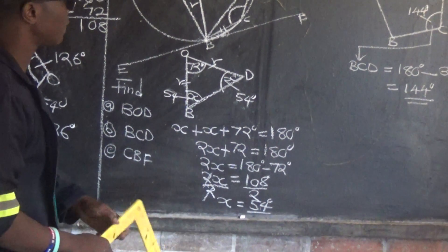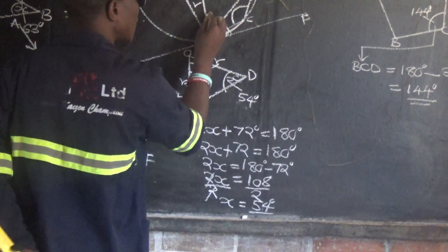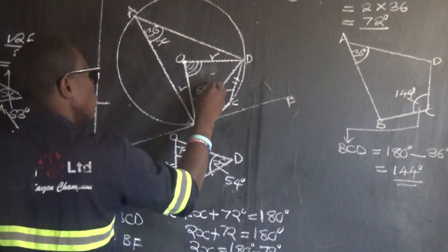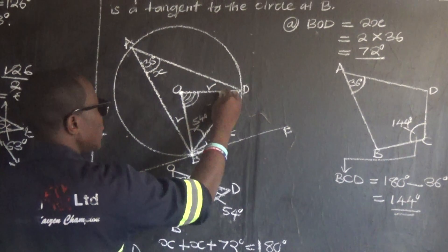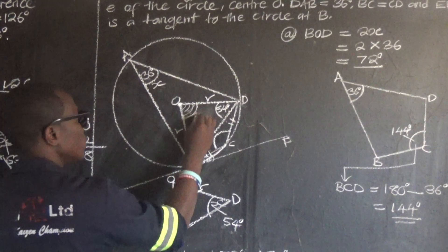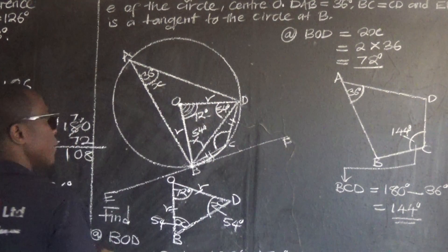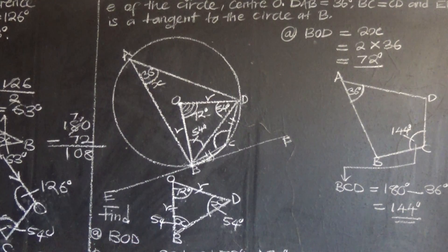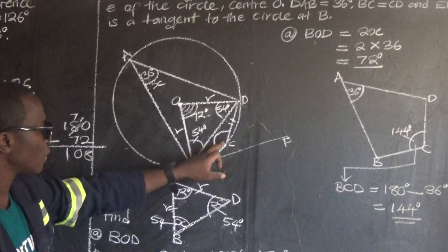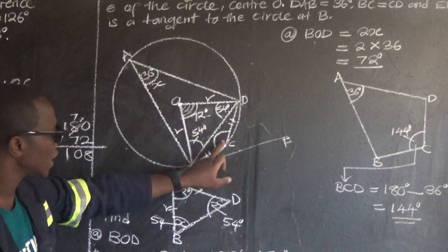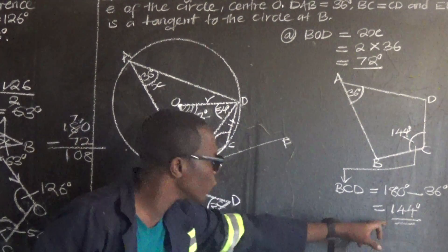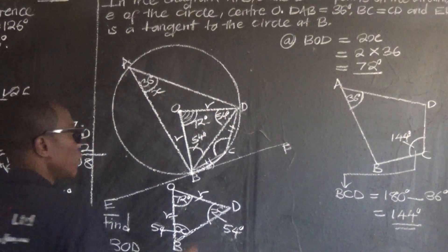Now, 54 degrees is not our final answer for angle CBF directly. This angle OBD is 54 degrees. Since the base angle is 54, we can now use it to find angle CBF using the tangent-radius relationship.